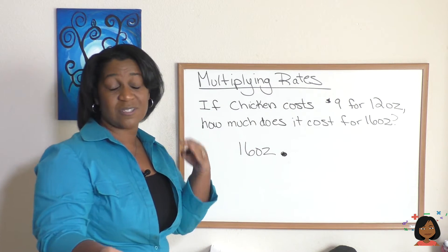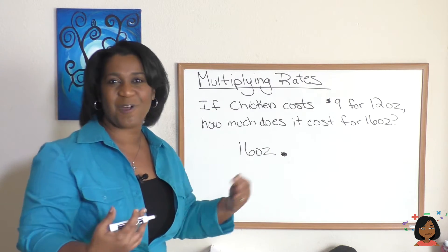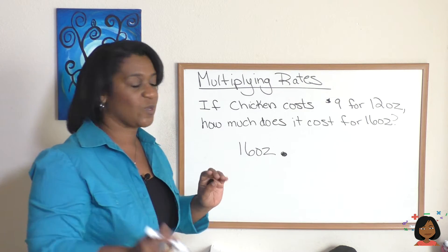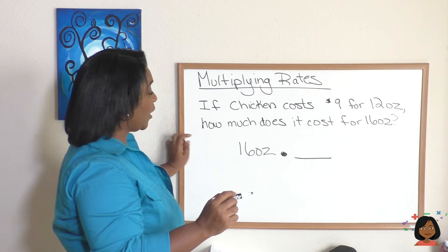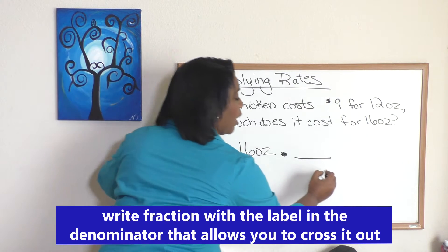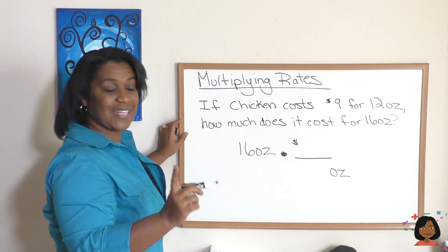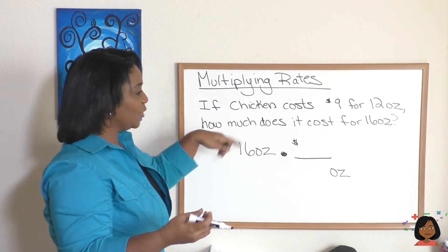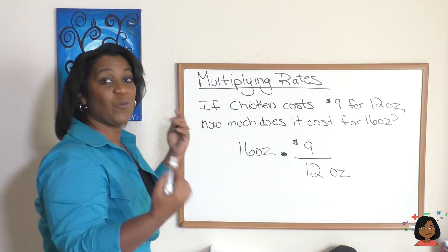Our rate is nine dollars for 12 ounces, or you could say 12 ounces costs nine dollars. The reason I say it both ways is it matters how you place it on the page. You want to put your rate as a fraction, but put the label that matches your problem on the bottom. So we're going to do ounces on the bottom, dollars on top — nine dollars for 12 ounces — because later we'll need to cross out that label when we simplify.